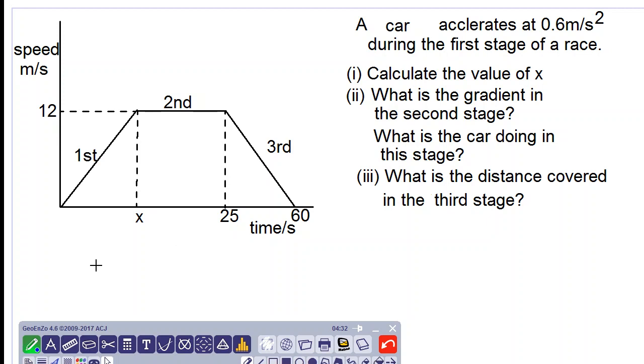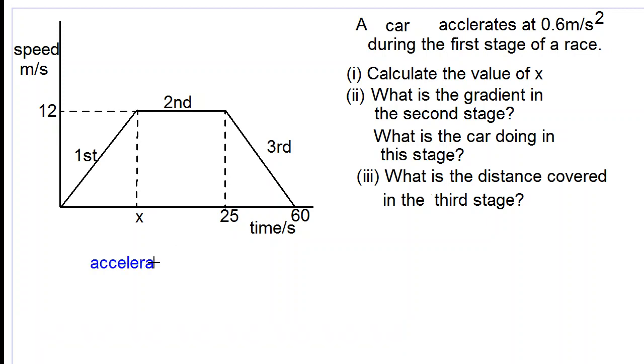Acceleration equals speed divided by time. So we have a speed of 12 meters per second divided by the time x equals acceleration of 0.6.